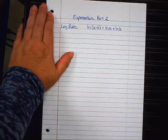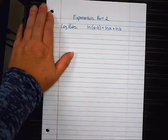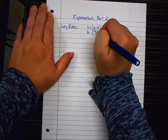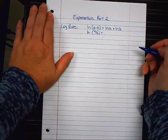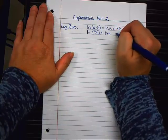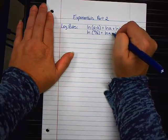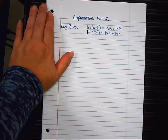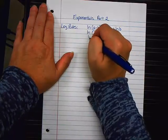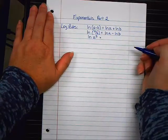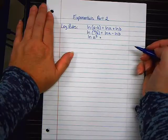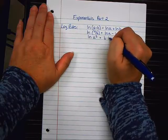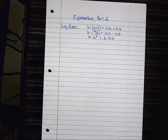Does that look vaguely familiar? Rule number two. The natural log of A over B is equal to the natural log of A minus the natural log of B. Division becomes subtraction. And then the final one is the natural log of A to the B power. It's B times the natural log of A. Powers go to the front.